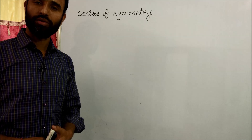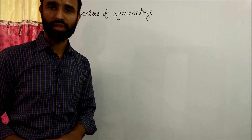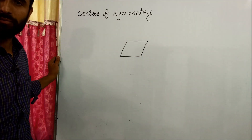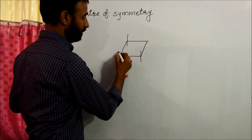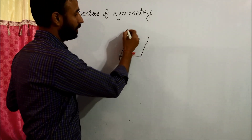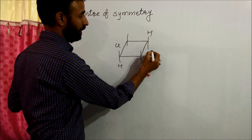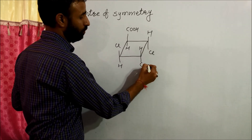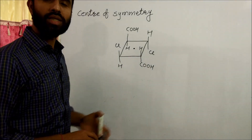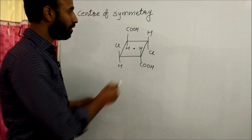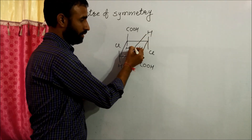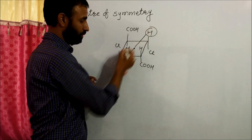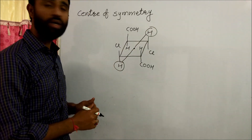The second element of symmetry is center of symmetry. Center of symmetry can be explained by taking an example of a substituted cyclobutane, with substituents Cl, COOH, H, H, Cl, COOH arranged around the ring. A center of symmetry exists when a line drawn from an atom or group to the central point, and extended beyond that point, meets an identical atom or group. That is called center of symmetry. All substituents — H/H, Cl/Cl, COOH/COOH — are symmetrical about the center point.